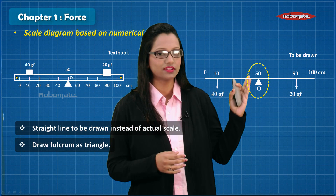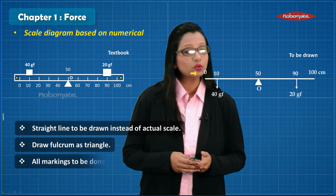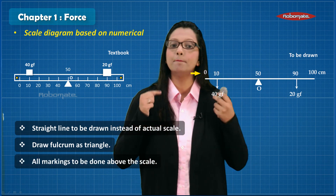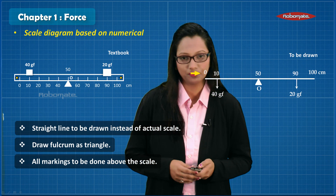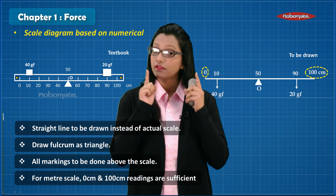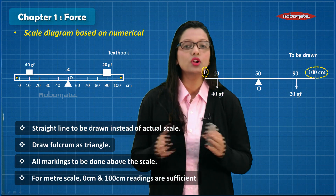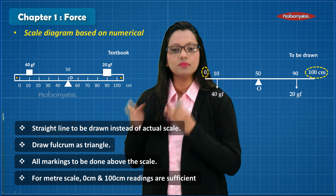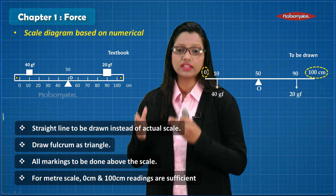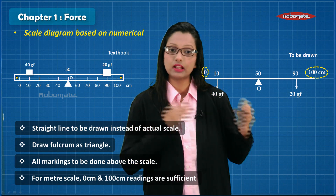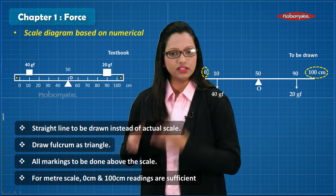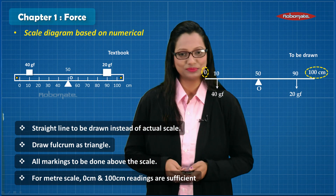The next important highlight is that you should not forget to draw the small triangle. Also, all the markings should be above the scale. To save time, you need not draw all the markings of the scale as shown in the textbook — from 0 to 10, 20, till 100. All you require is just the marking of 0 and 100 centimeters.